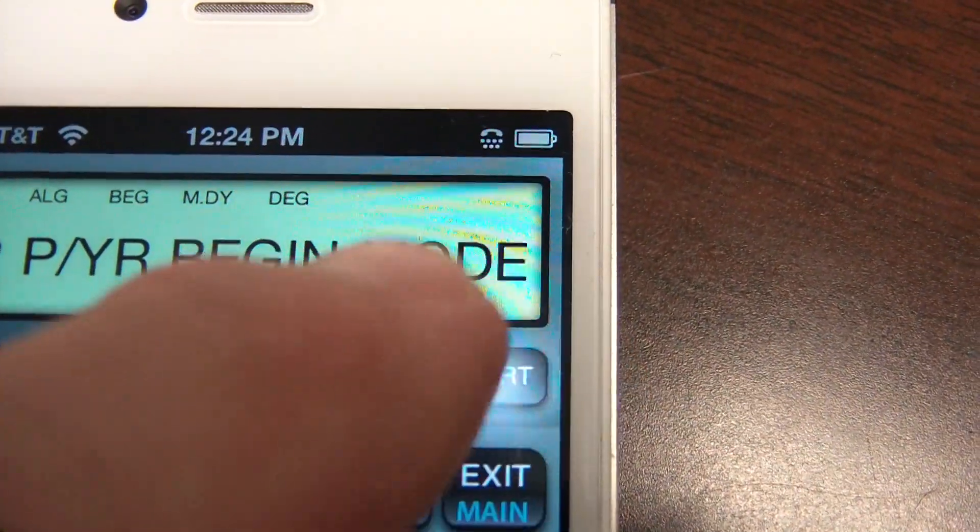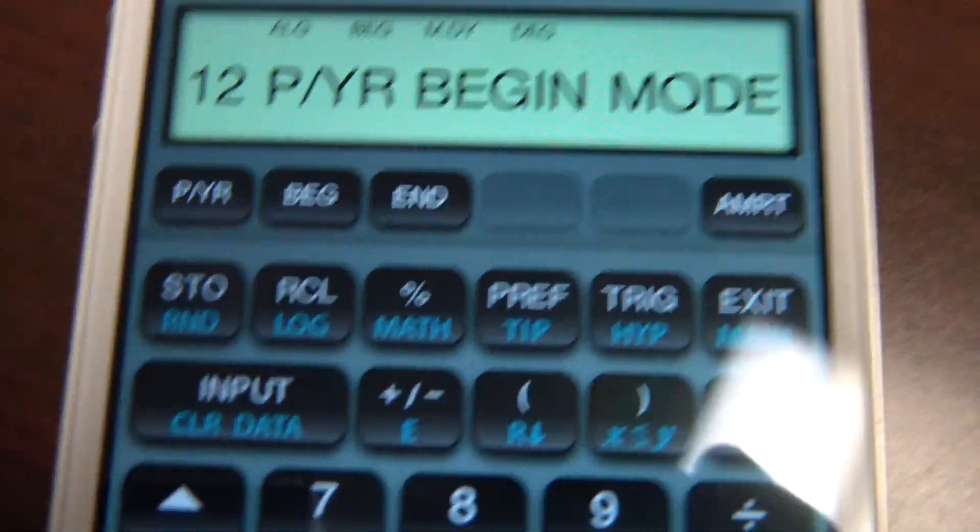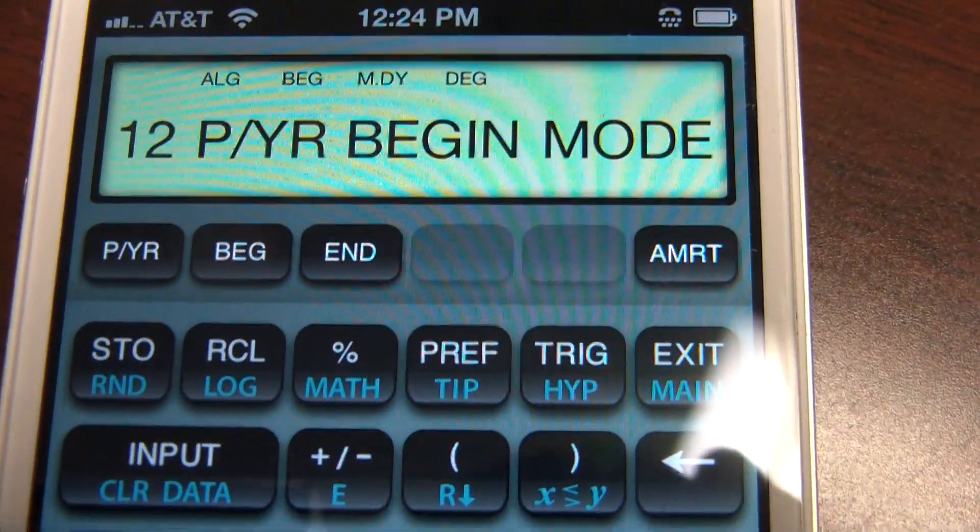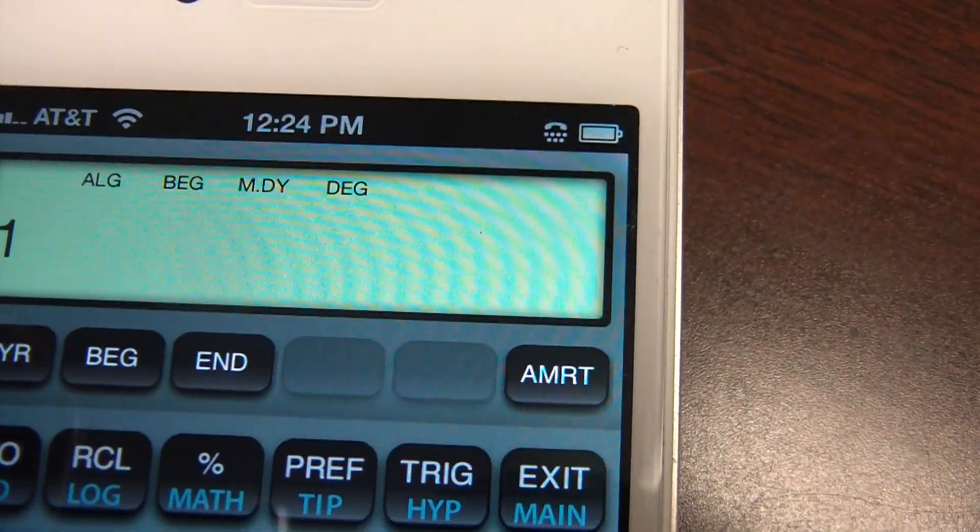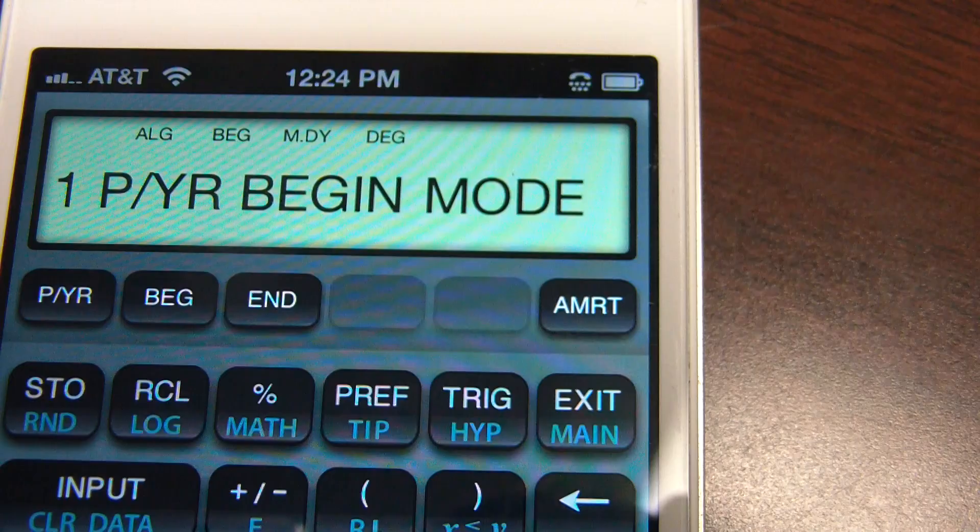I can go to the other menu, click other, and it will say payments per year. To adjust this for one payment a year, I push the one button, push the payment per year key. It's one payment per year.